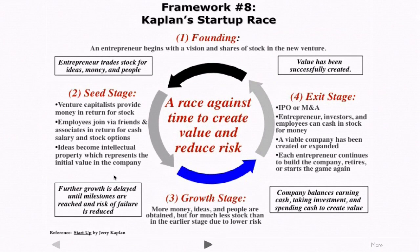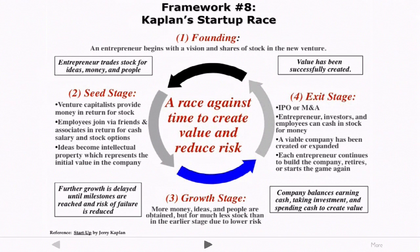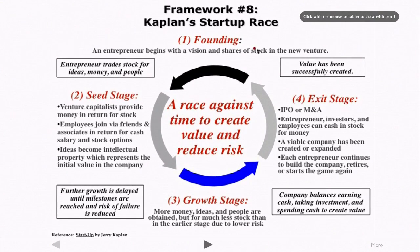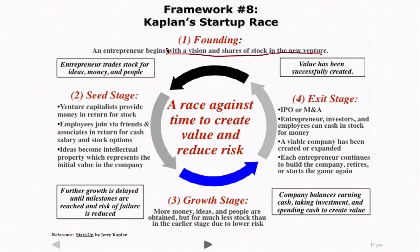Framework number eight comes from Jerry Kaplan's book Startup, and it's Kaplan's Startup Race. The idea is that a startup is essentially a race against time to reduce risk and create value. The steps begin with a founding: the entrepreneur starts with a vision and creates shares of stock in a new venture. The entrepreneur then trades that stock for three things: ideas, money and investment, and people to join as co-founders or early employees.